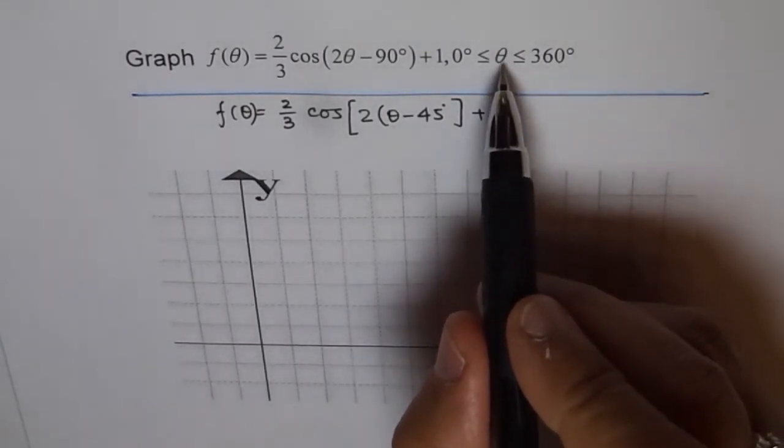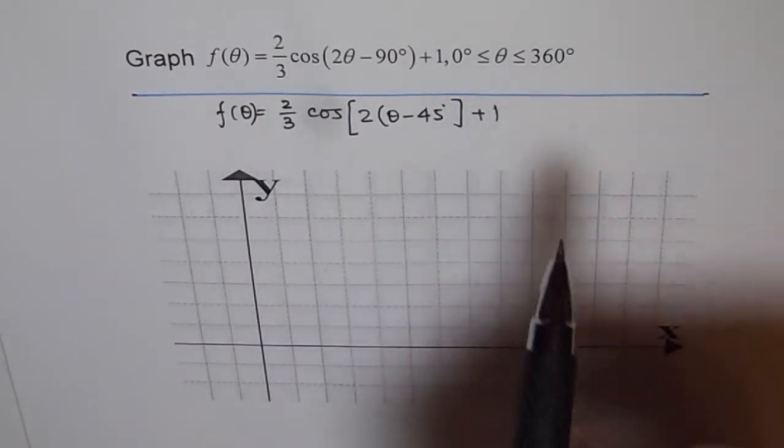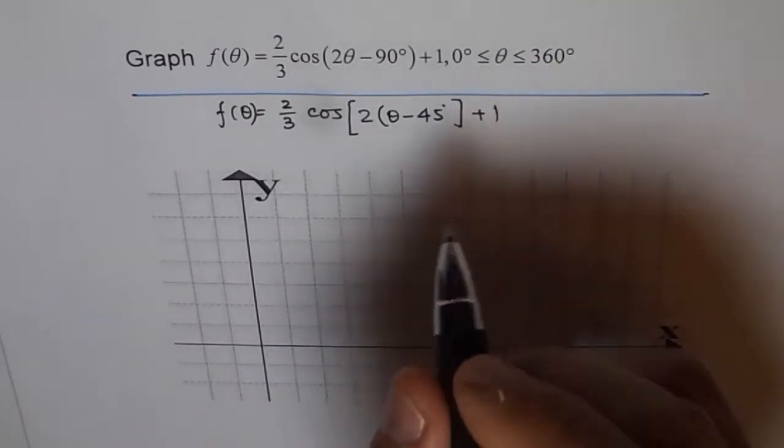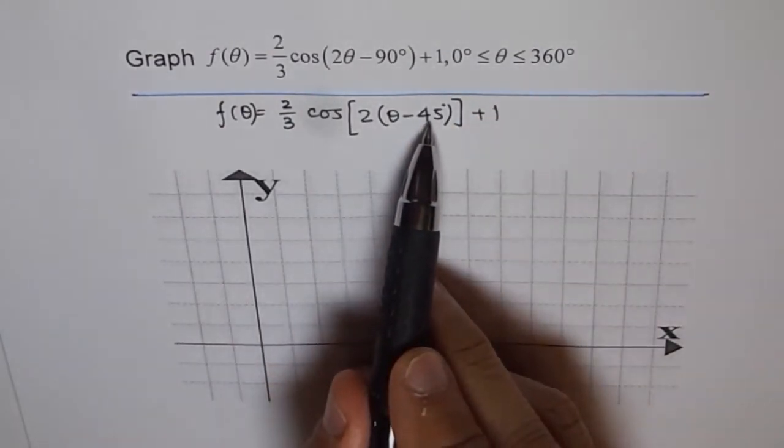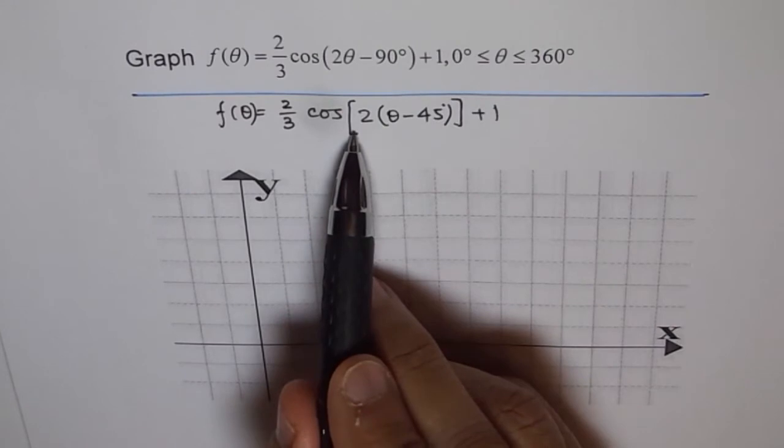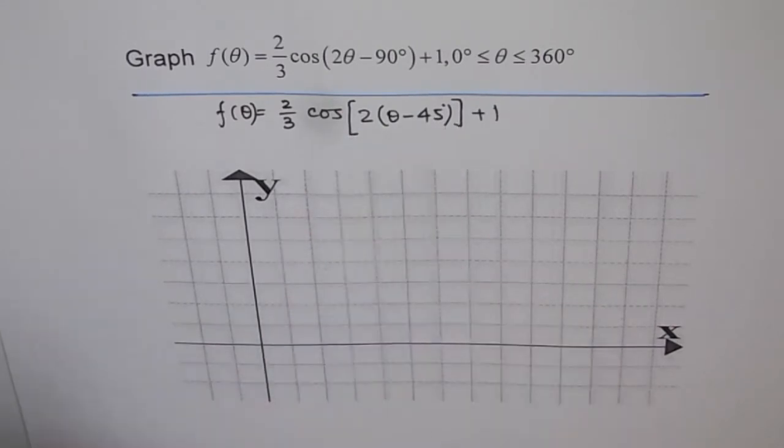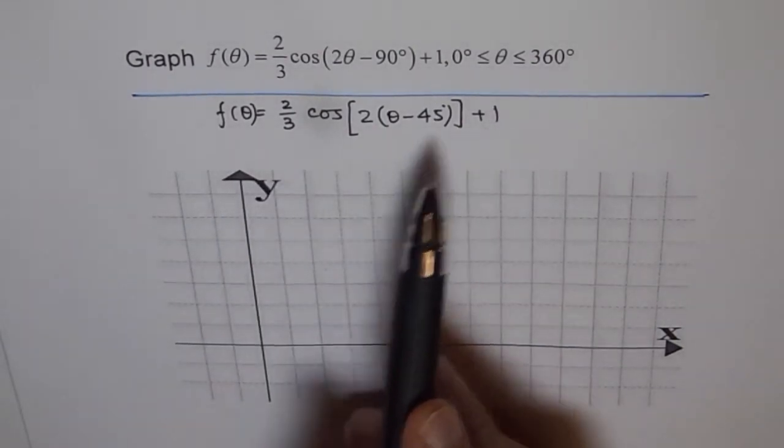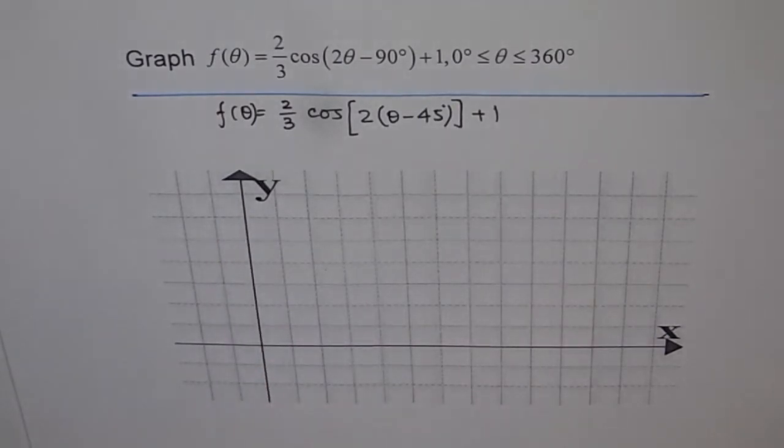That is for theta and not 2 theta - 0 to 360 degrees, one cycle only we will draw. What you observe here is that the phase shift is 45 degrees. Whatever is inside this actually decides on the horizontal axis and the outside parameters decide about the vertical axis.